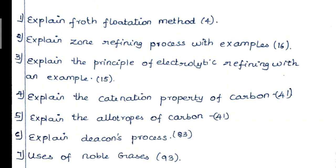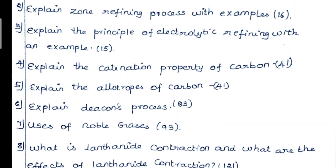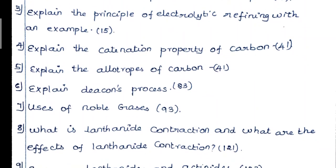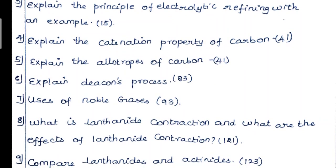3rd Question: Explain the Principle of Electrolytic Refining with Example — Page No. 15. 4th Question: Explain the Catenation Property of Carbon. 5th Question: Explain the Allotropes of Carbon — Page No. 41.